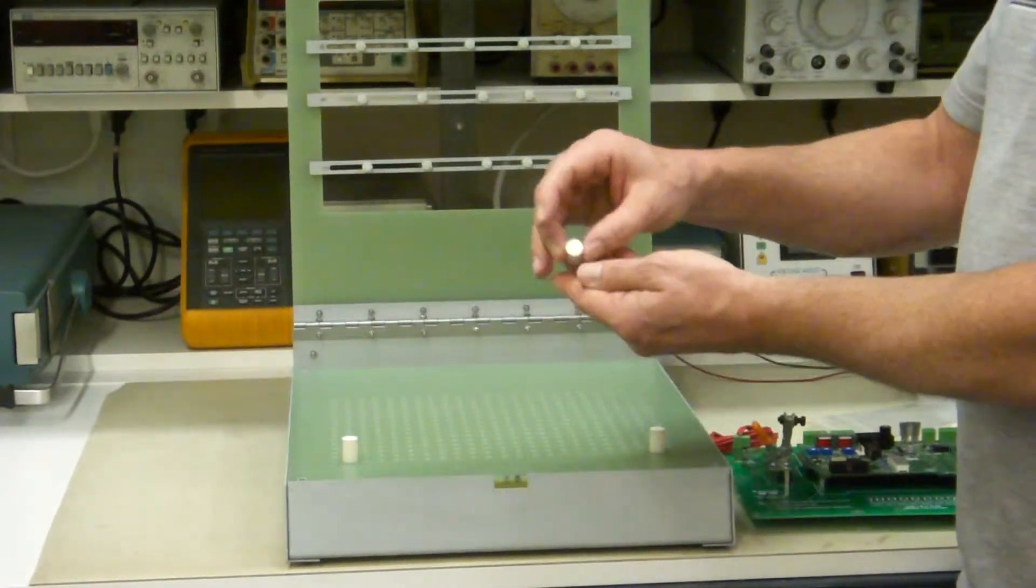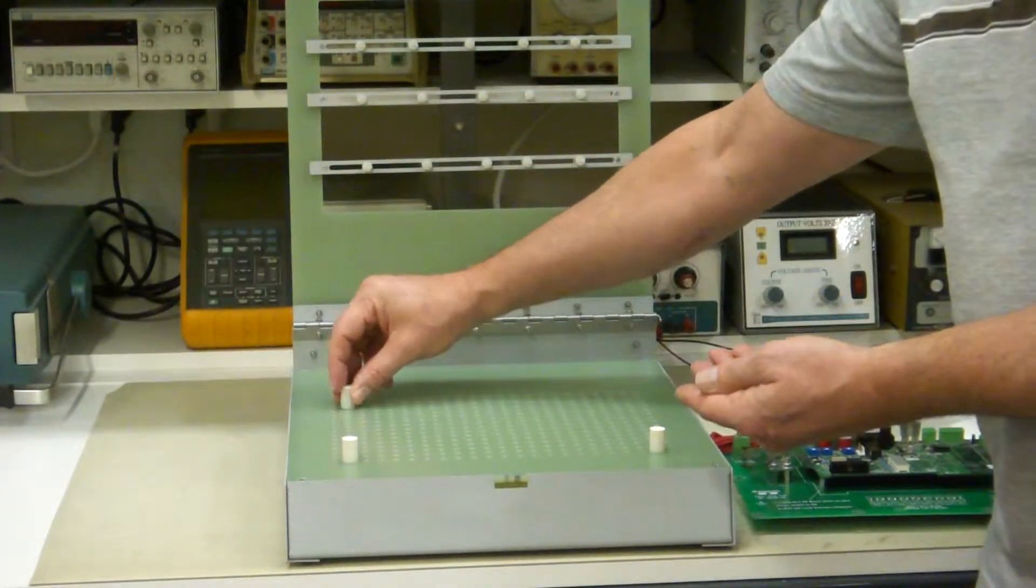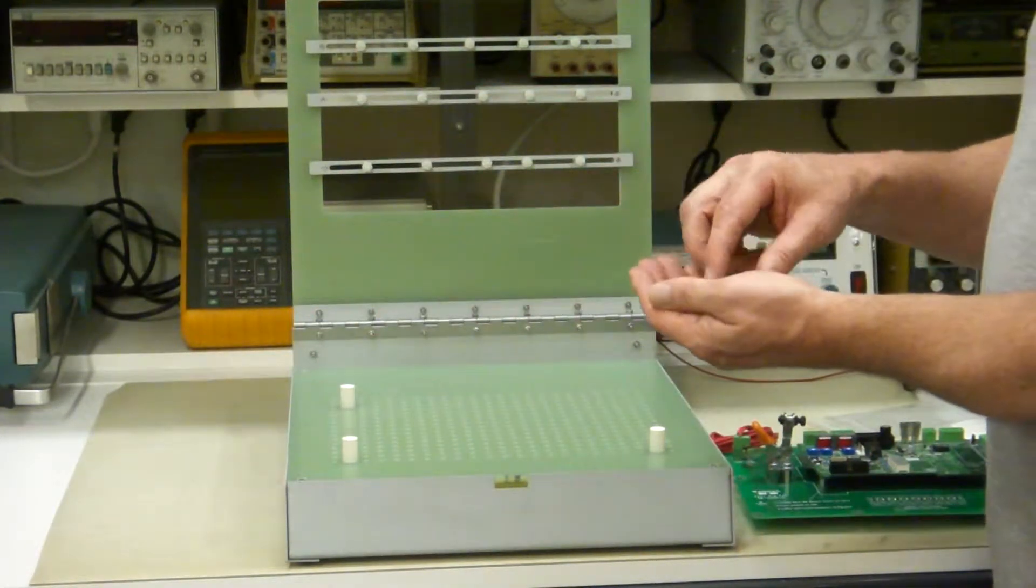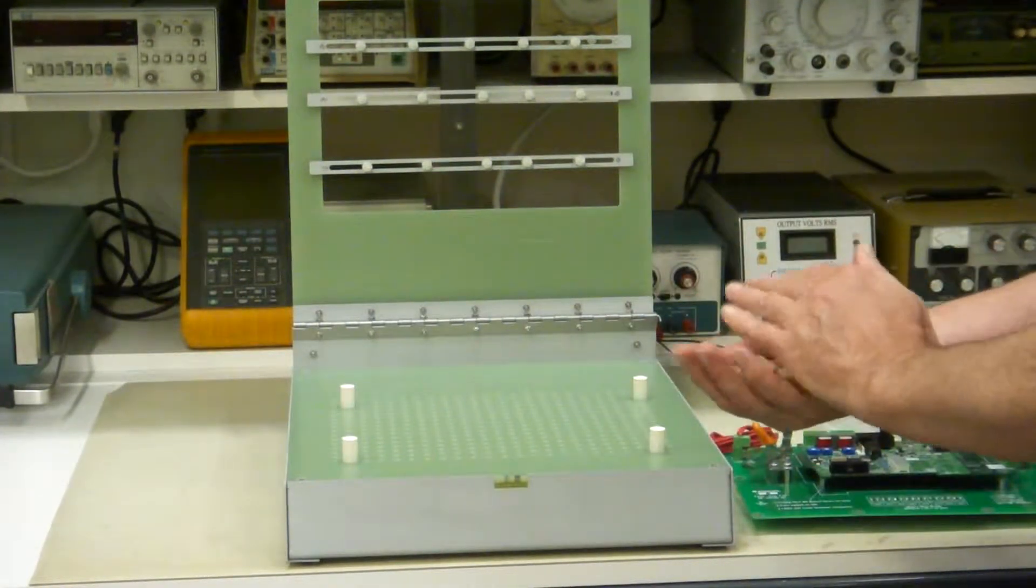Now these pegs have an adhesive back here but they have a wax paper covering over it that you just peel off when you want to adhere it. So the pegs go in like these, these are, you get four of them.